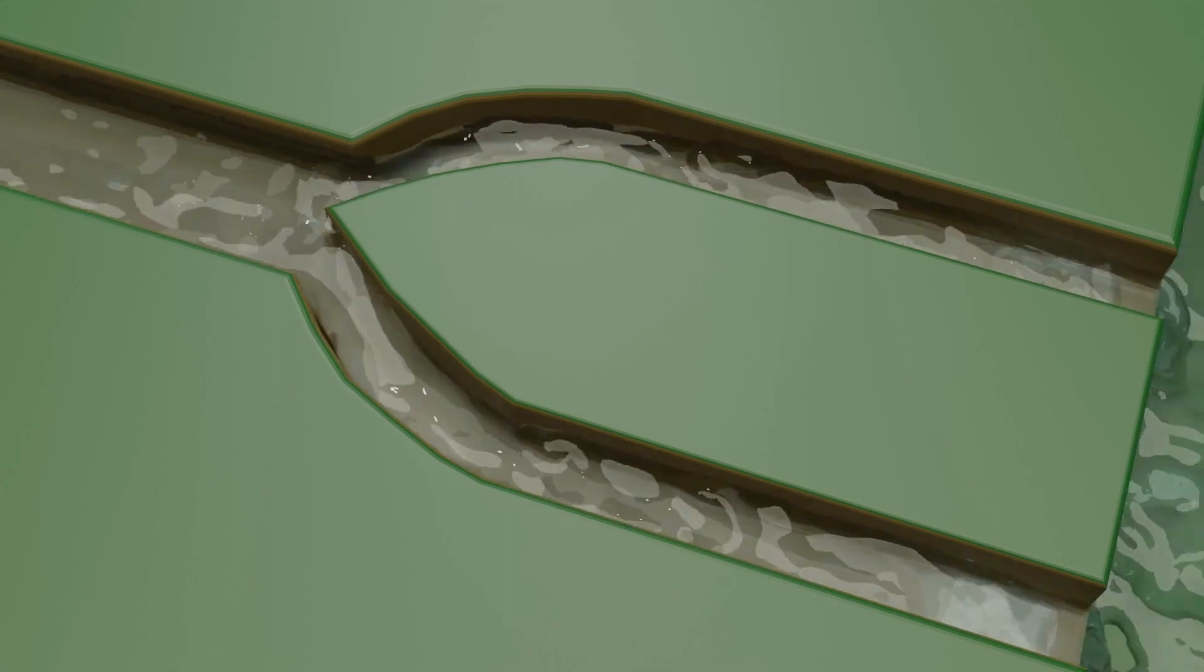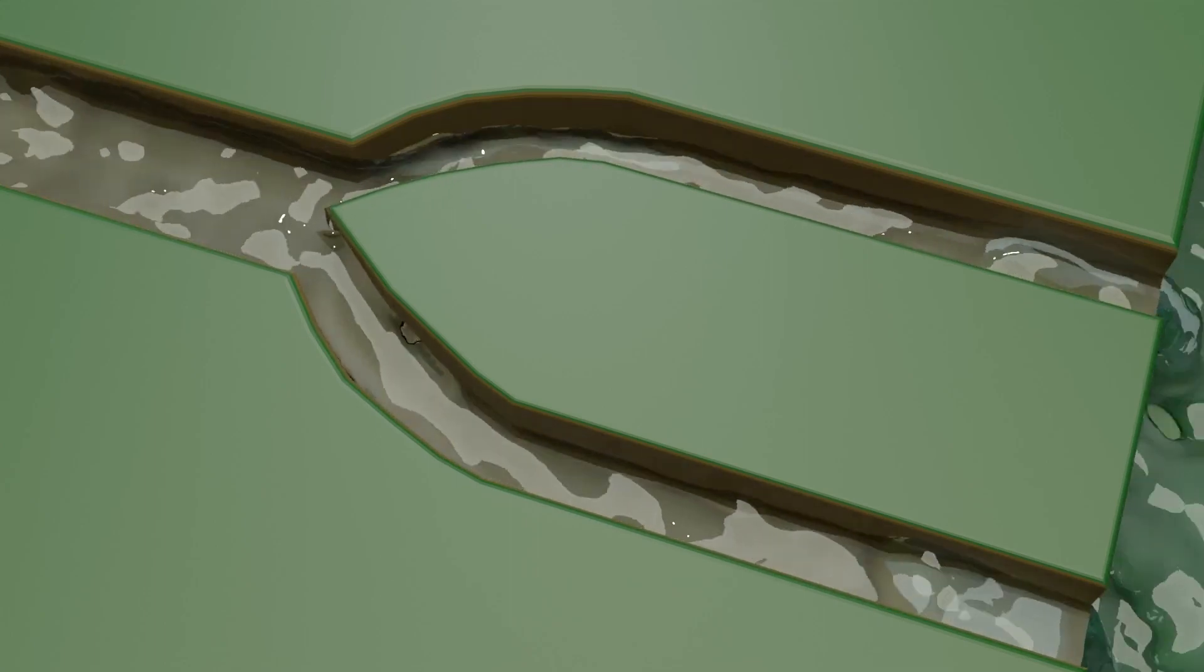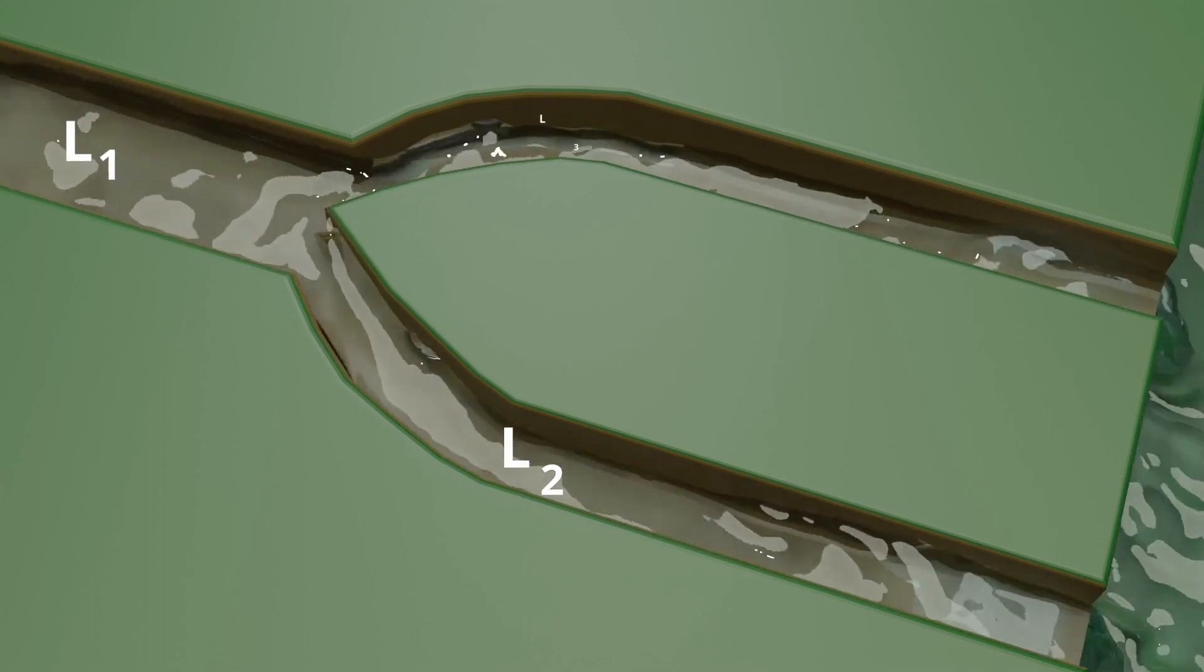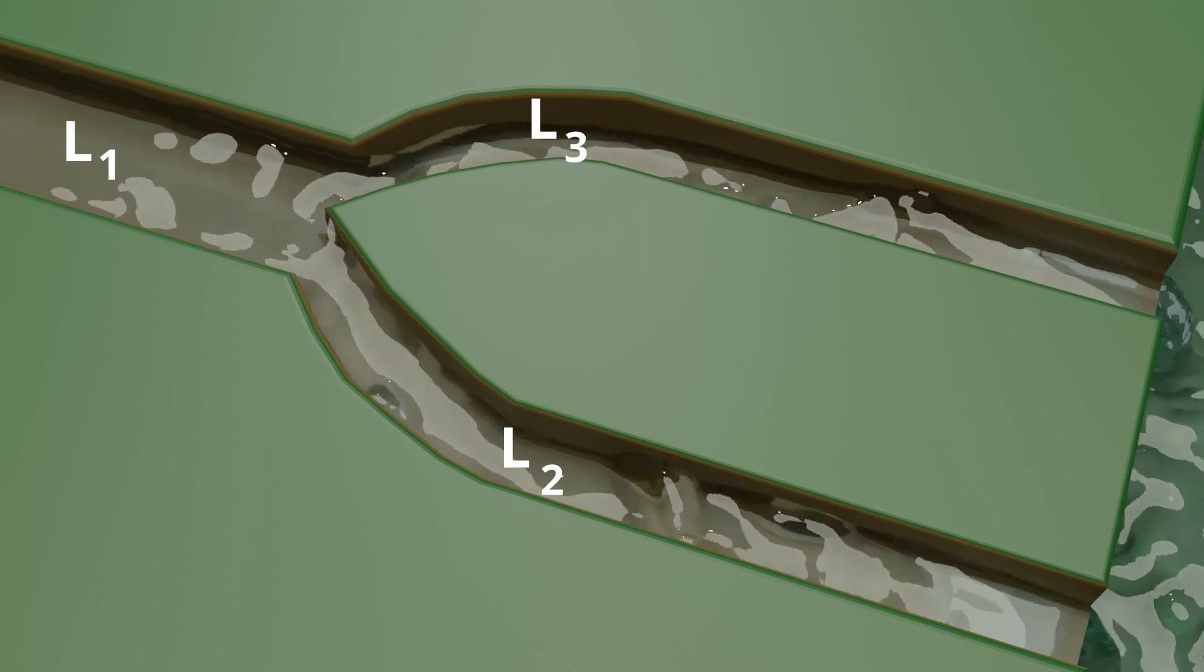See this analogy: in this water flow, water comes from one source and is split into two ways. Let L1 be the incoming flow and L2 and L3 are the outgoing flow.